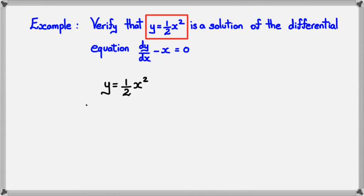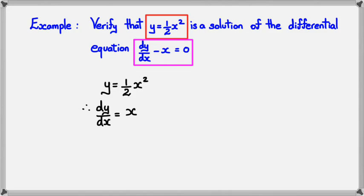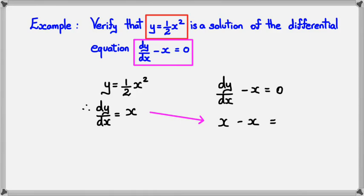With this in mind, we can work out dy/dx, which is equal to x. Now what we do is substitute dy/dx minus x and prove that it equals 0. We know that dy/dx is equal to x, and of course x minus x is equal to 0. So we've verified that it is a solution to the differential equation.